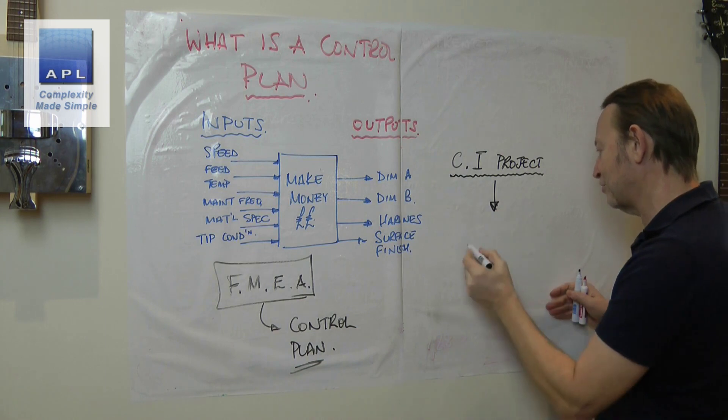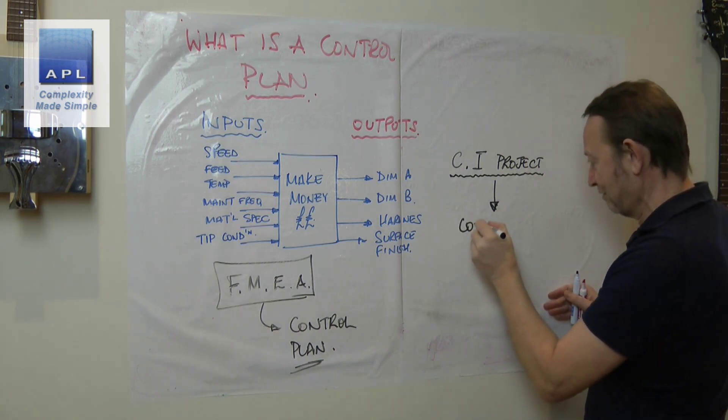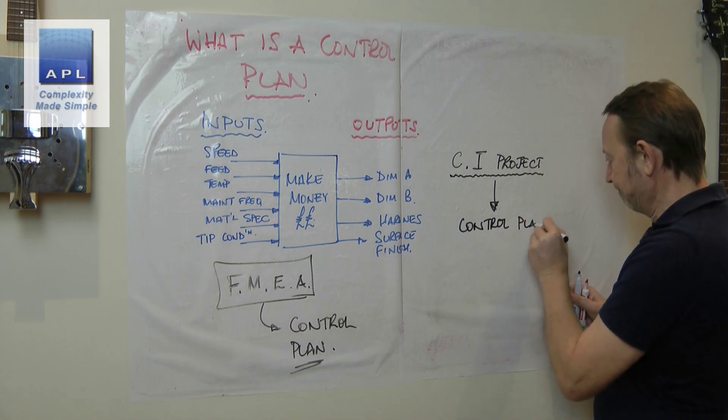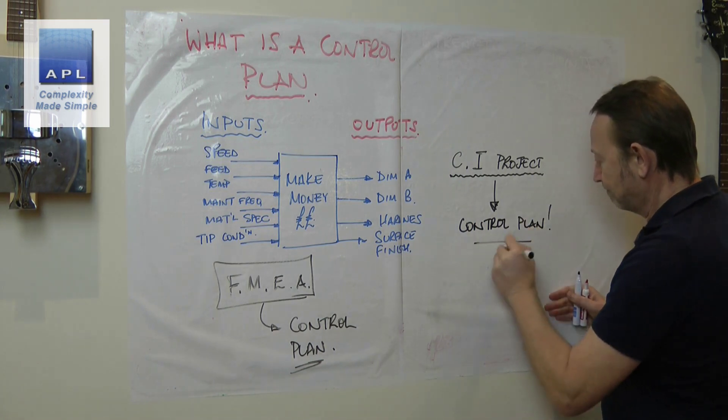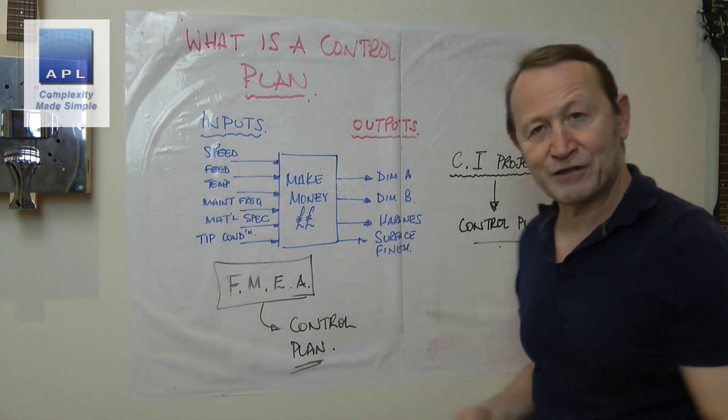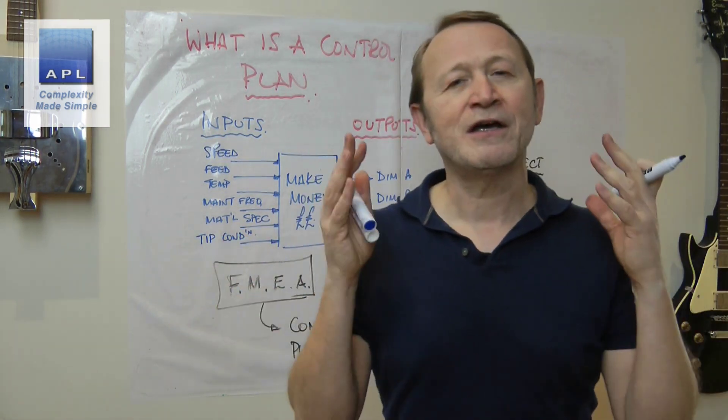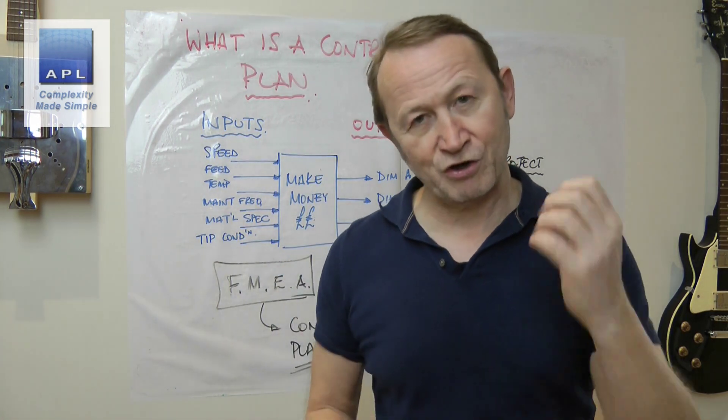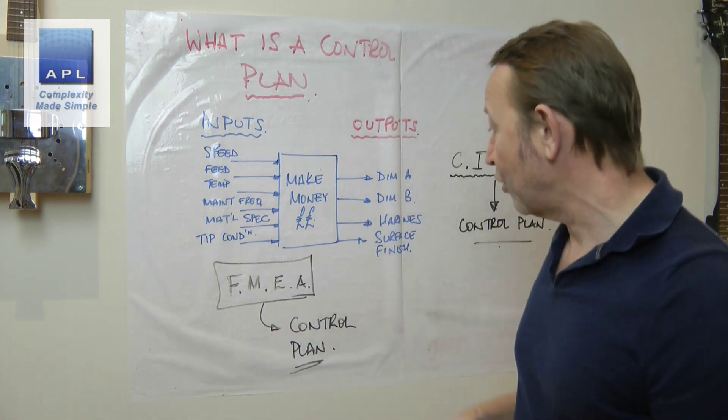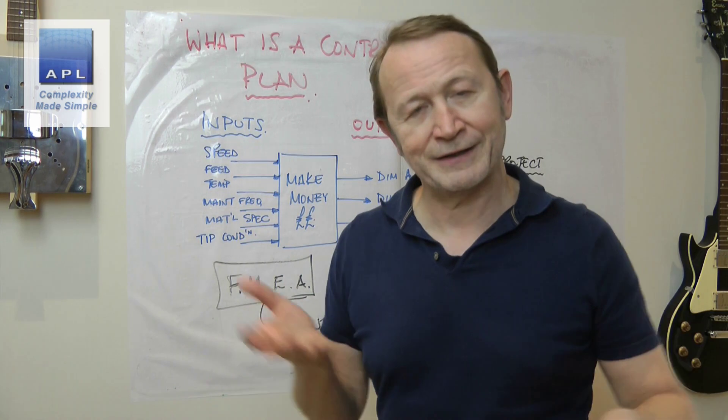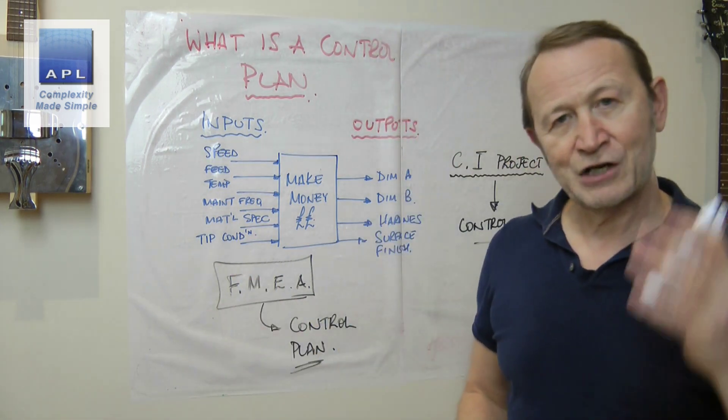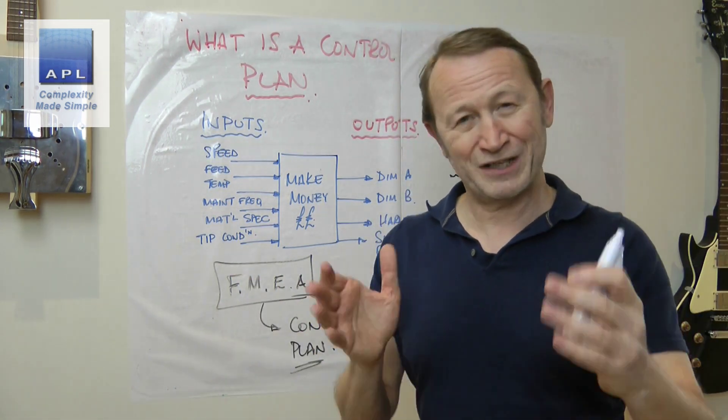That's what you should have done. And what comes out of the FMEA is a control plan. Now typically if you didn't do the FMEA or you didn't do the FMEA properly because you just think it's filling in a piece of paper after the fact, typically what you've done is implement chaos.